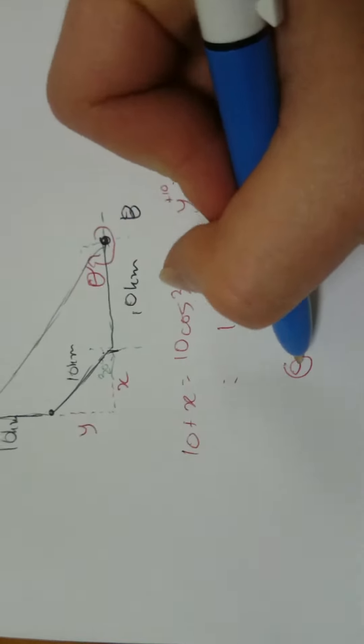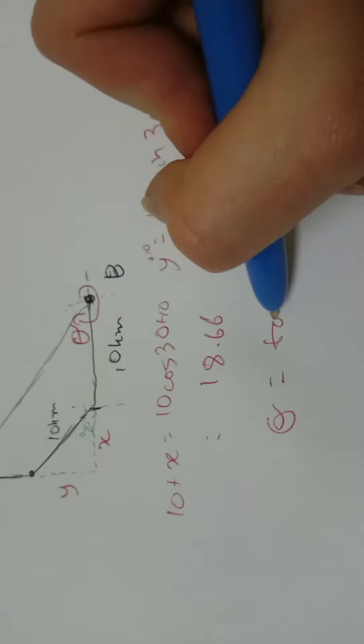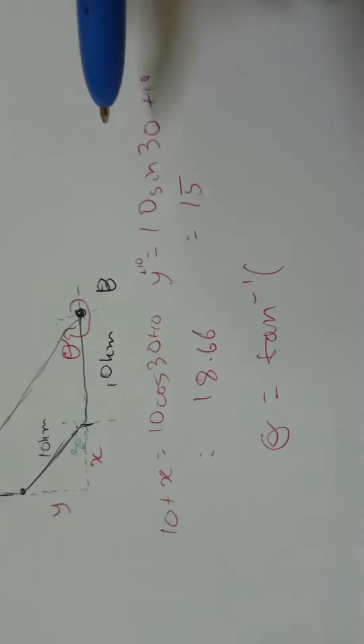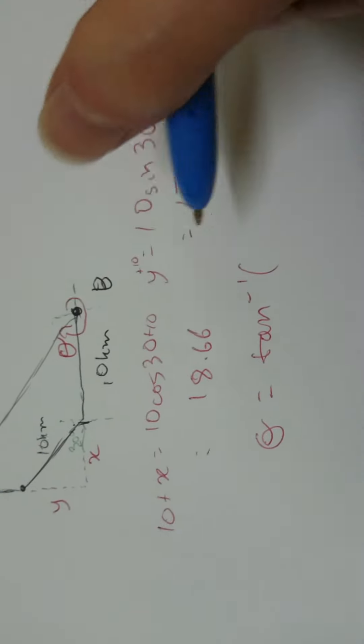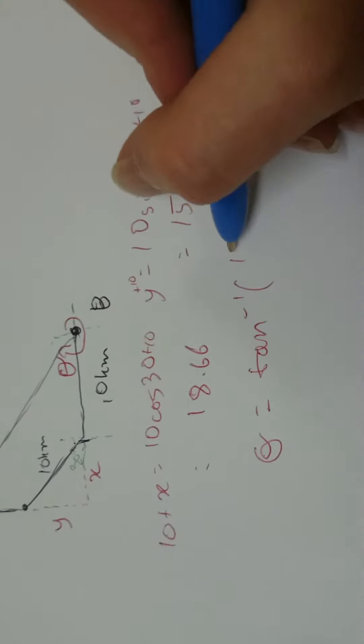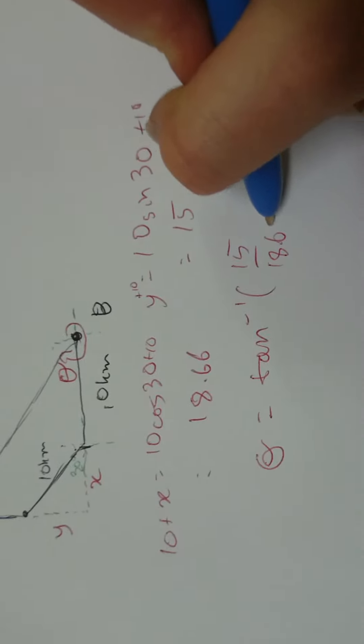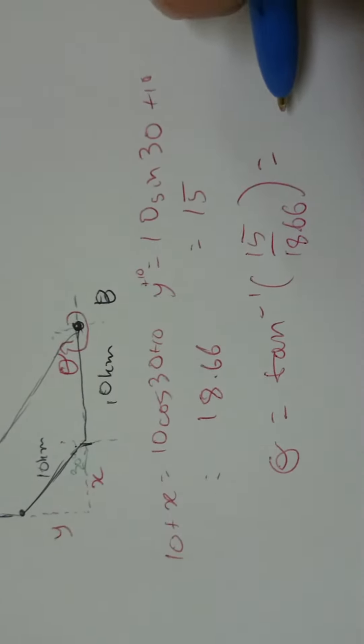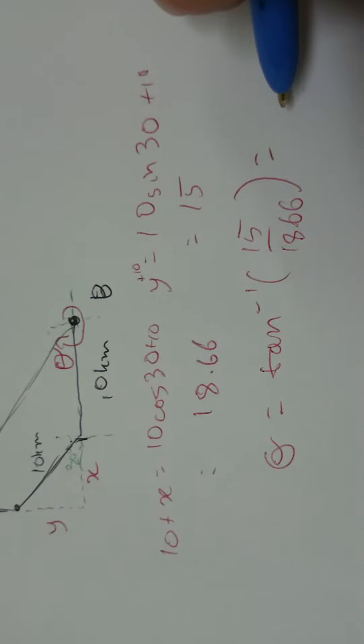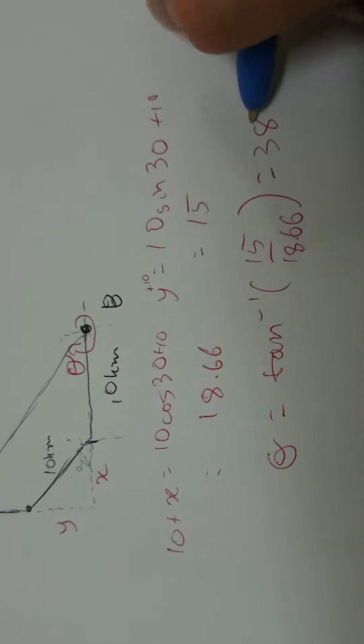Now, we've just got to go theta equals inverse tan of opposite over adjacent. So, 15 on 18.66. That equals 38.8 degrees.